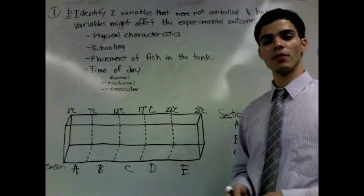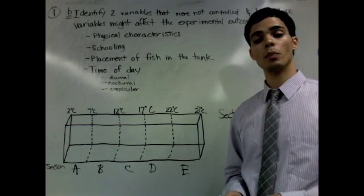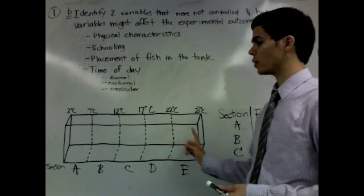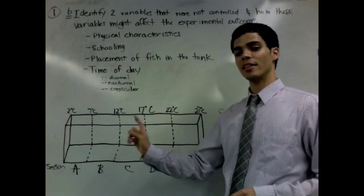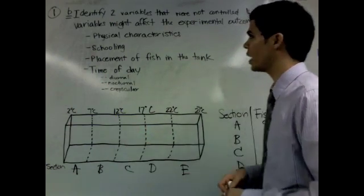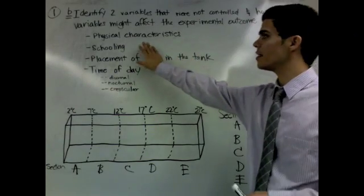Well, you can imagine that if the fish were of mating age, and we put both male and female fish into the tank, they could be chasing each other around the tank simply because they want to mate, not because of the temperature gradient. And so that could affect the outcome of the experiment. The next is schooling.